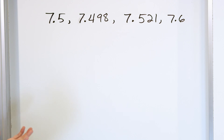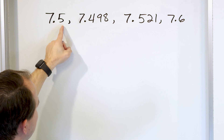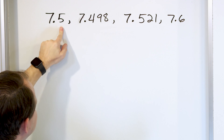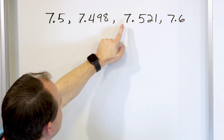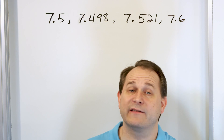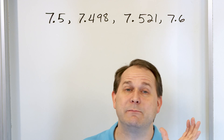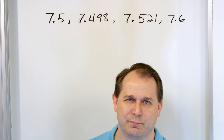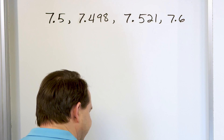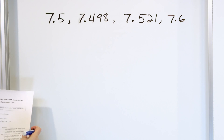The reason it looks a little bit harder is because these decimals have a different number of digits — one digit after the decimal here, three digits here, three digits here, one digit here. The very first step is just like in the last lesson: we want to write all the numbers with the same number of digits after the decimal point. The second thing is it's going to be easier if we write the numbers stacked on top of each other.